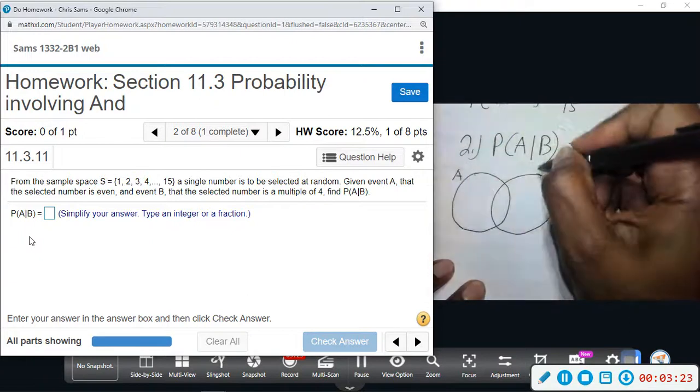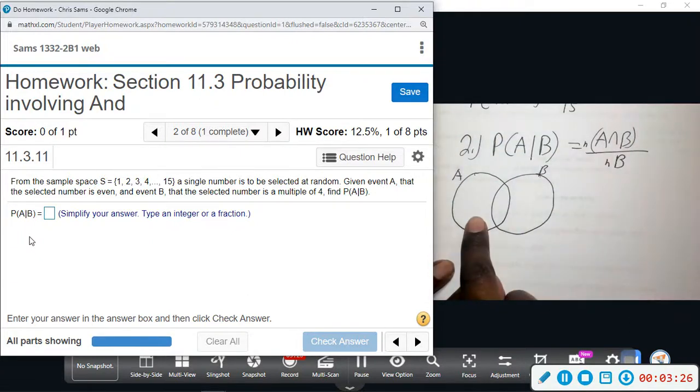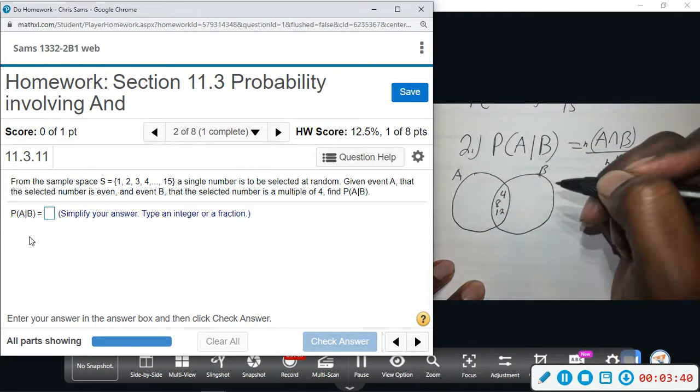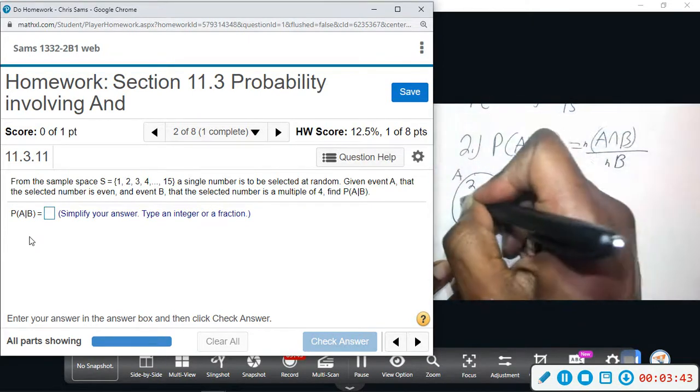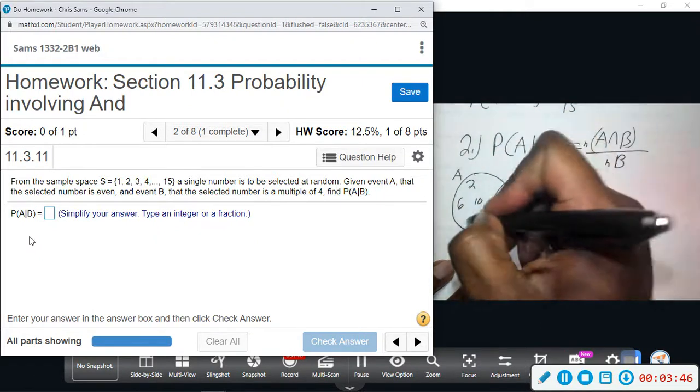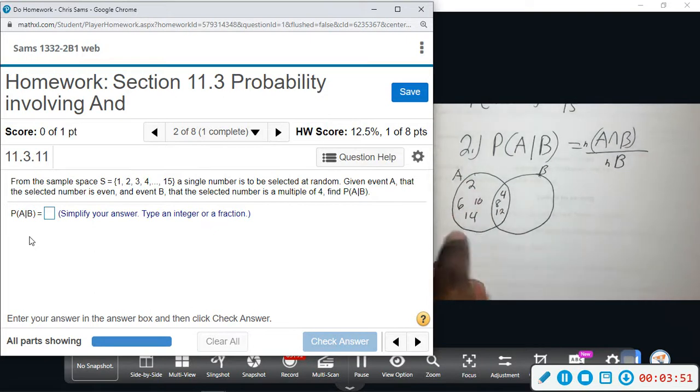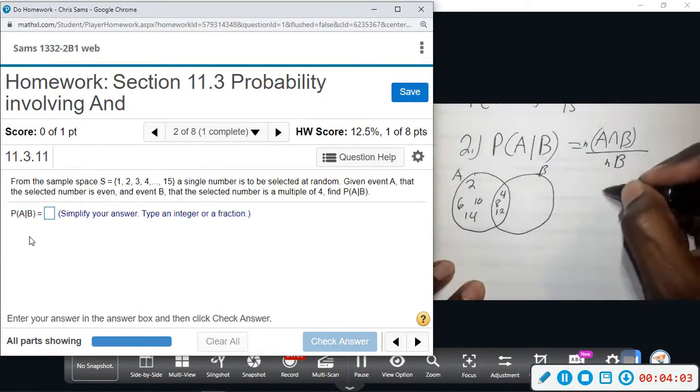So here's A, here's B. A is the number that's even, B is a multiple of four. So even numbers would be 2, 6, 10, 14, and multiples of four would be 4, 8, and 12. So those are all the even numbers in A. B, the number is a multiple of four, so 4, 8, 12, that's it.